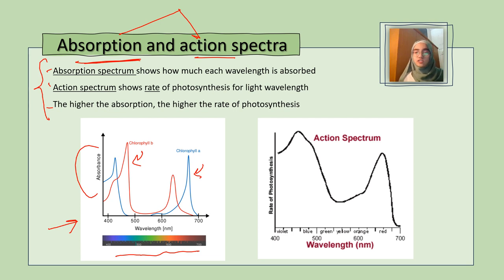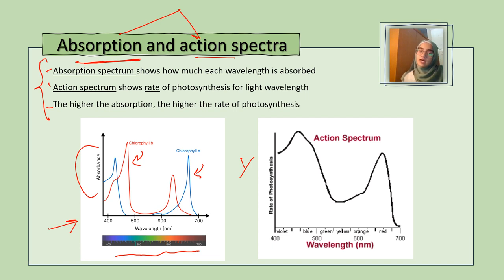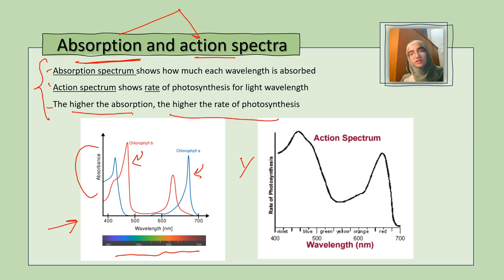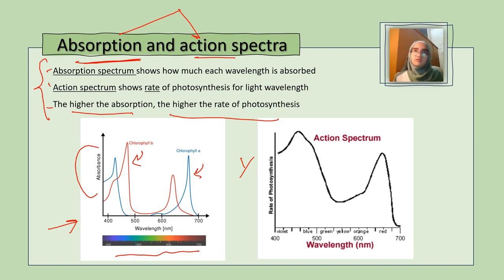The action spectrum has the rate of photosynthesis on the y-axis and shows the rate of photosynthesis for different light wavelengths. Different wavelengths have a different effect on the rate of photosynthesis overall. The higher the absorbance, the higher the rate of photosynthesis, because more light absorbed means more electrons are excited faster, so the rate of the light-dependent reaction increases.